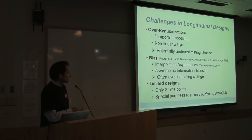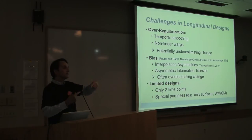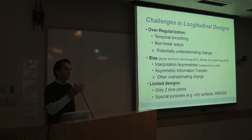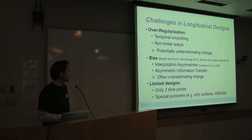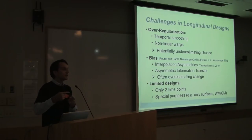Another problem, not published as much, is asymmetric information transfer. If you take the baseline, create surfaces on it, map them to a follow-up, and then let them evolve a little longer — that treats the two images differently. On the second time point you let it run longer than the first, which is a bad idea because you may end up with change that isn't real.